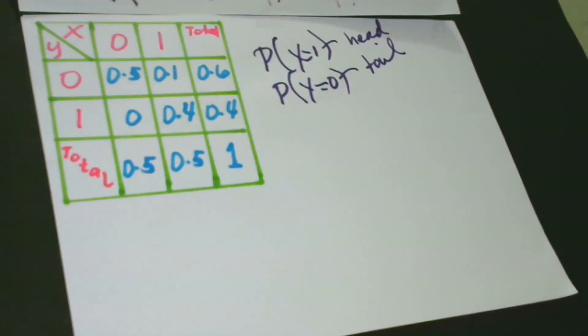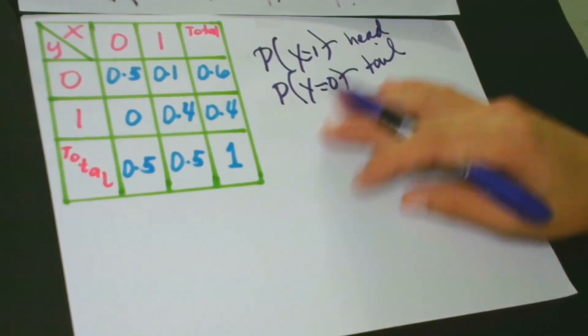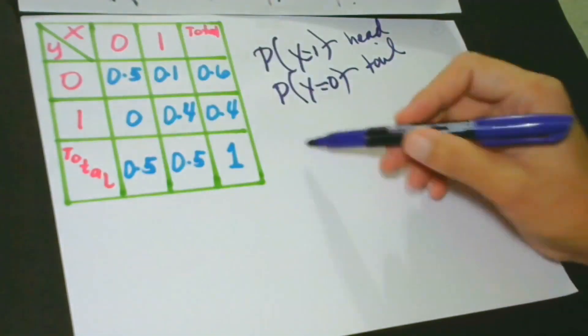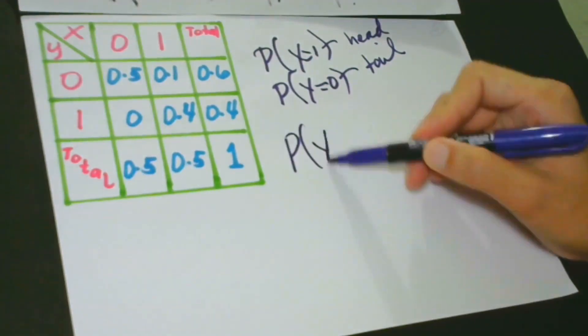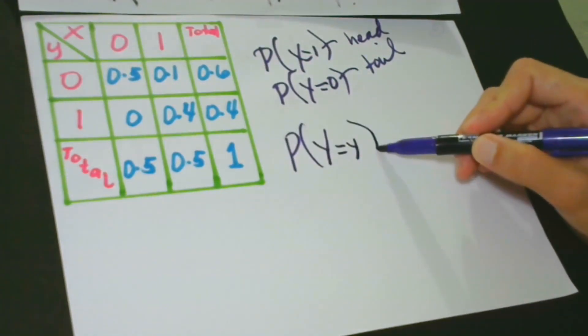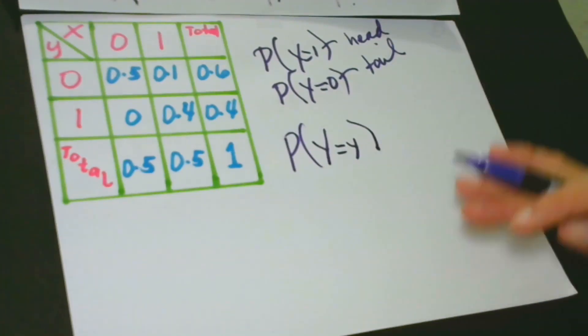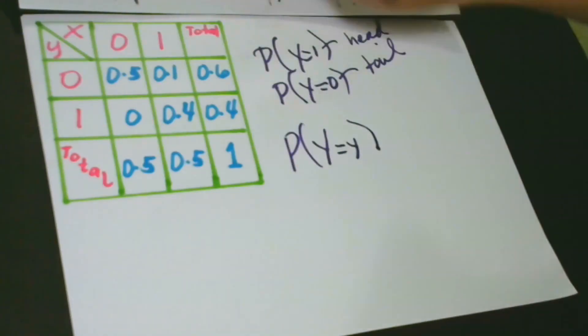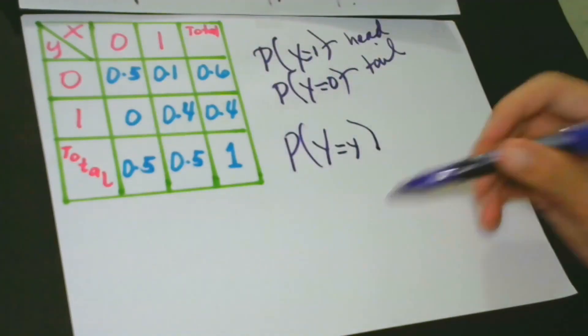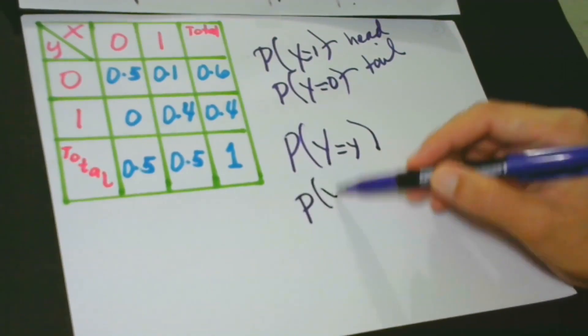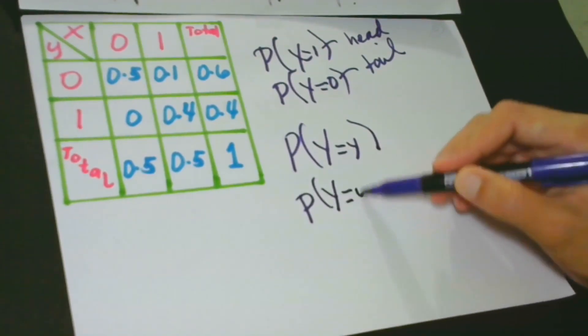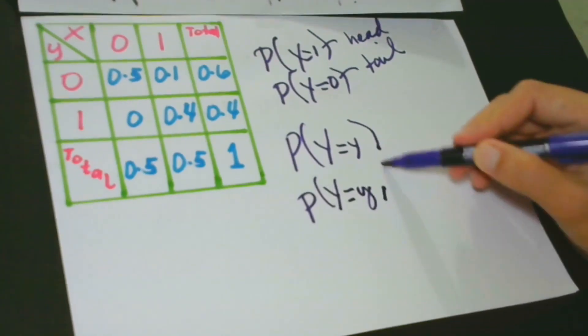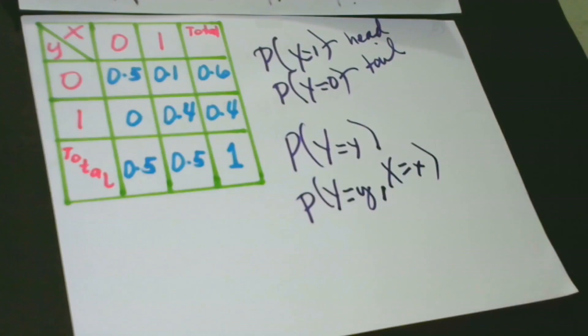Again, we are not considering X because we are focusing on what I say or on the values of Y. P(Y=y) can be obtained by marginalizing out X. It means by taking out X or disregarding X from the joint distribution. We are going to have P(Y=y given X=x).